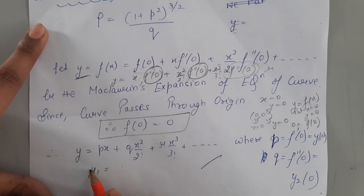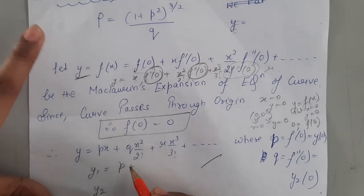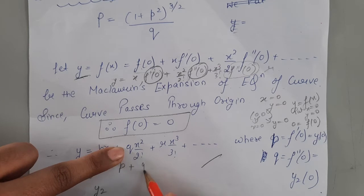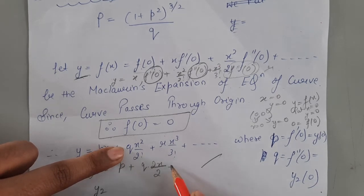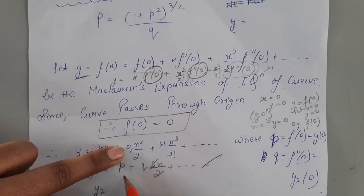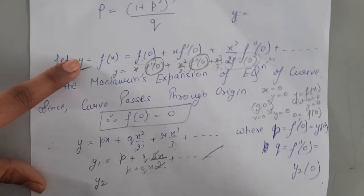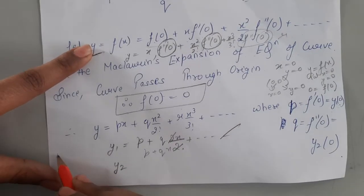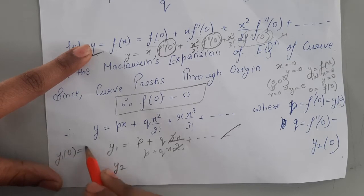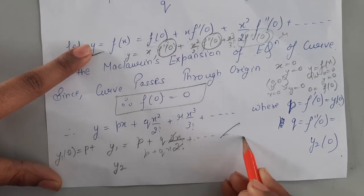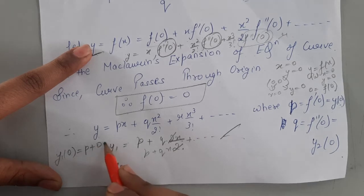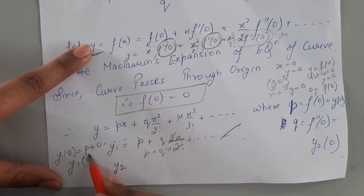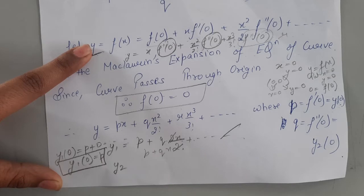y₁ = dy/dx gives p + qx + higher terms. At x=0, all terms involving x vanish, so y₁ at x=0 equals p. We said p = y₁ at 0, so y₁ at origin equals p.